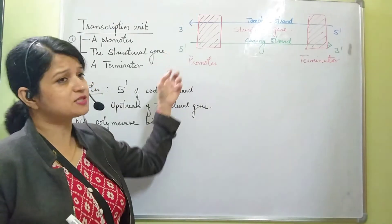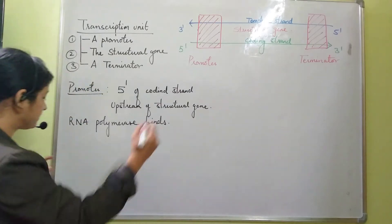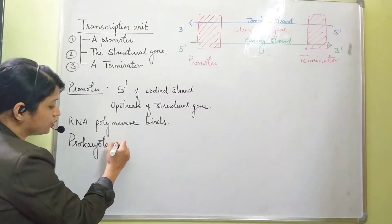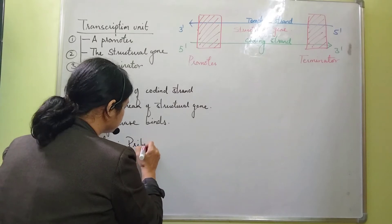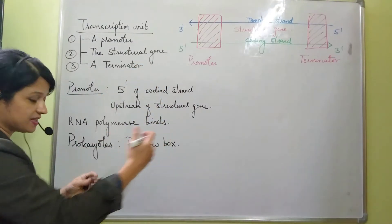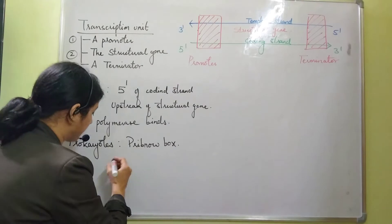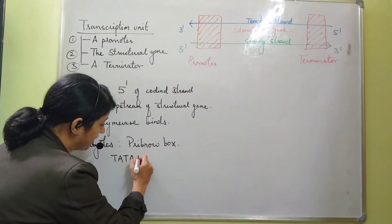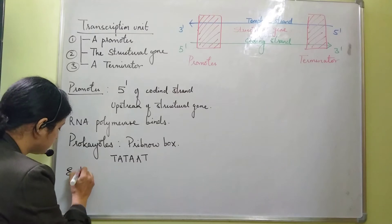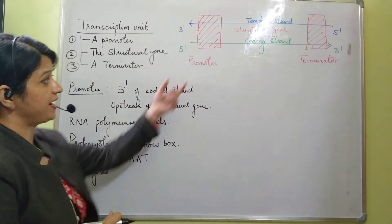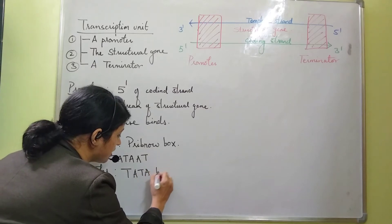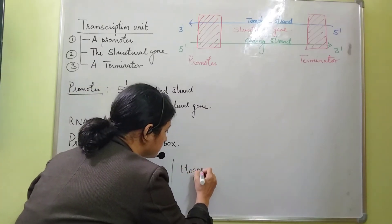In prokaryotes, the promoter has a specific AT-rich region known as the Pribnow box. This is a sequence of six base pairs — TATAAT. In eukaryotes, there is also an AT-rich region present in the promoter which is known as the TATA box, also called the Hognes box.